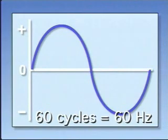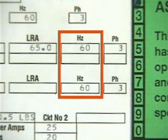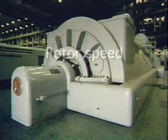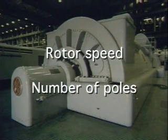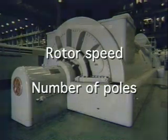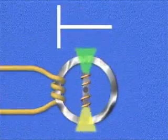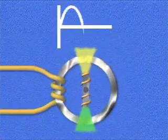It's important for a generator's speed to be consistent. Equipment that uses or produces electricity is usually designed to operate at a specific frequency. If the frequency changes, the equipment can be damaged. There are two factors that control the frequency of the current that is being generated: one is the speed at which the rotor turns, and the other factor is the number of magnetic poles in the rotor. In this illustration of a simplified generator, one cycle of current is produced for each revolution of the rotor, so the frequency equals the speed at which the rotor turns.